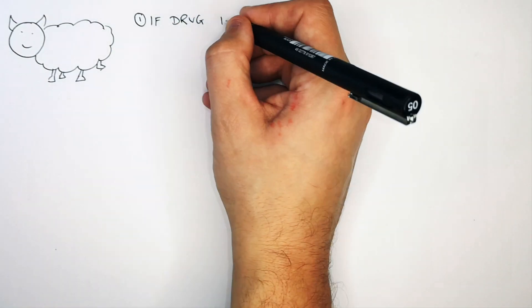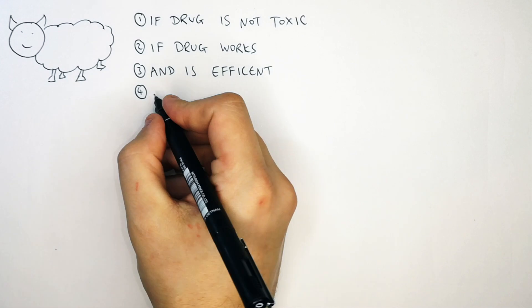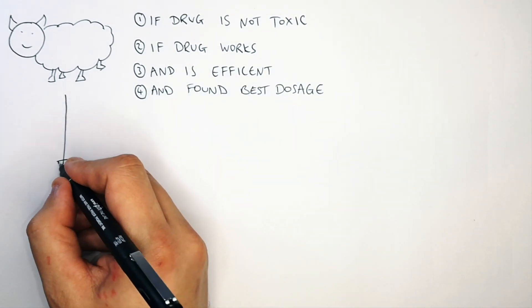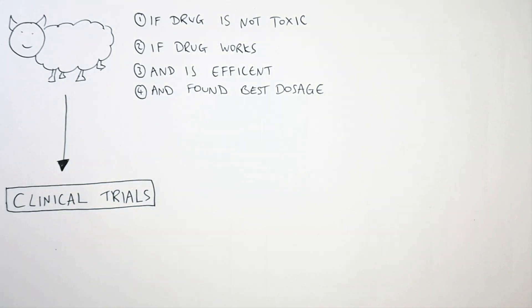So if the drug is not toxic, if the drug works and is efficient and the best dosage is found in the second live animal trials you can then move on to clinical trials where the drug is tested on humans.